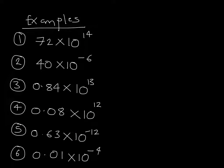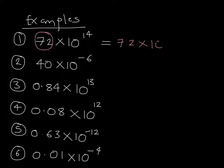Work through each of these examples — the values given are not in standard form and we have to convert them. In the first example, 72 multiplied by 10 to the power of 14: instead of 72, we make this 7.2. As we've made the number 72 ten times smaller, we have to make the power of 10 ten times bigger, which means the answer is 7.2 multiplied by 10 to the power of 15.